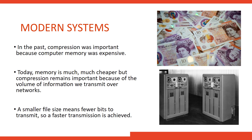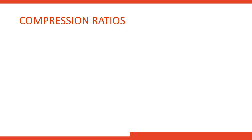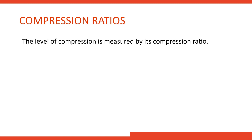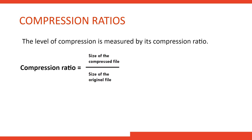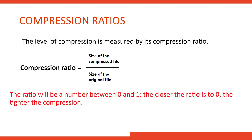Let's talk about compression ratios. A compression ratio is the level of compression that is measured, calculated as the size of the compressed file divided by the size of the original file. These ratios sit between zero and one — the closer the ratio is to zero, the tighter the compression. One represents the original file size and zero would mean no data at all.